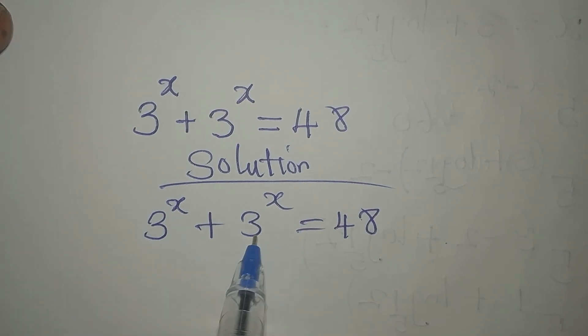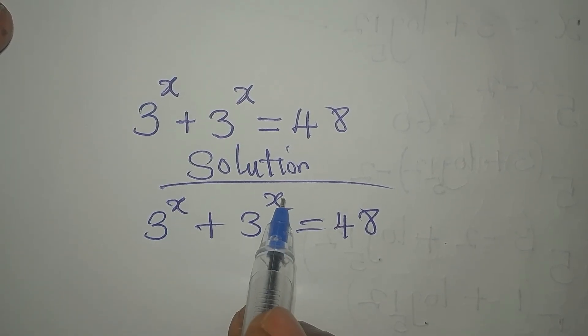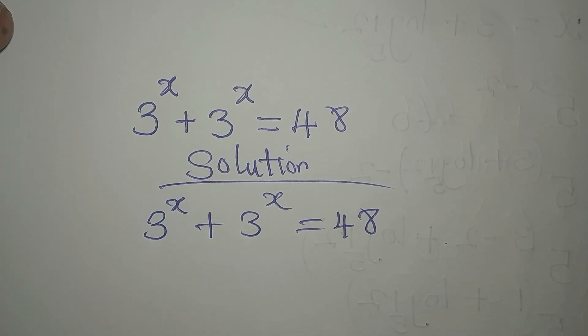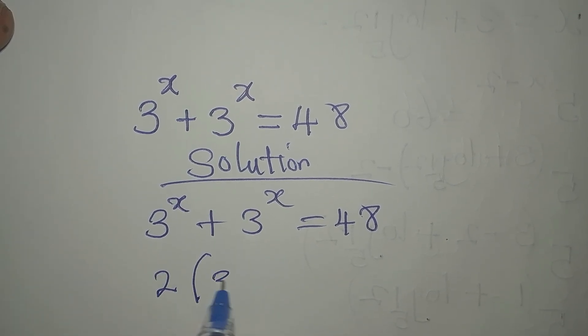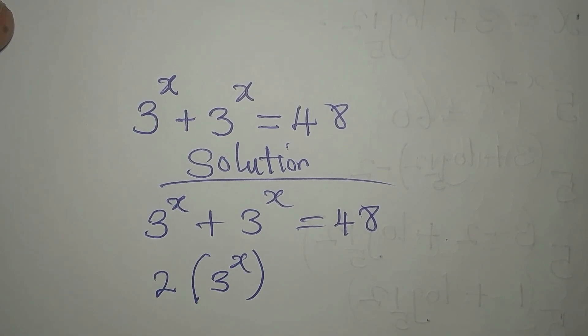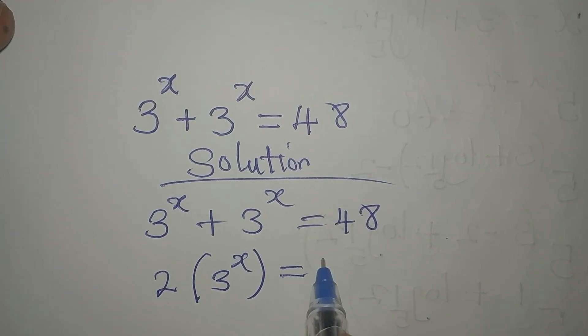Now, 3 to the power of x plus 3 to the power of x, just like you add x plus x to get 2x, this can give us 2 of 3 to the power of x, and then we have 48 on the right.